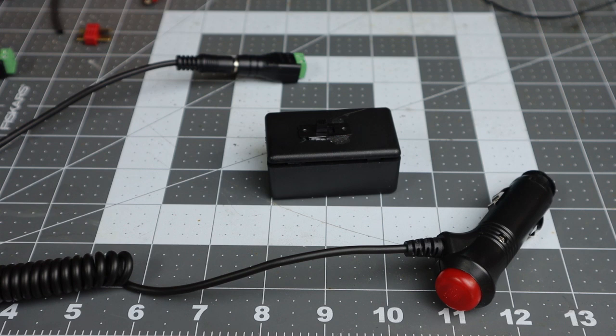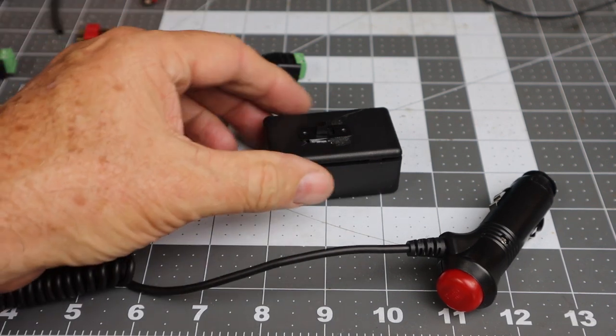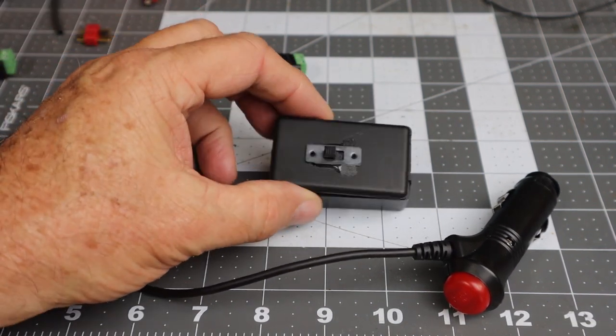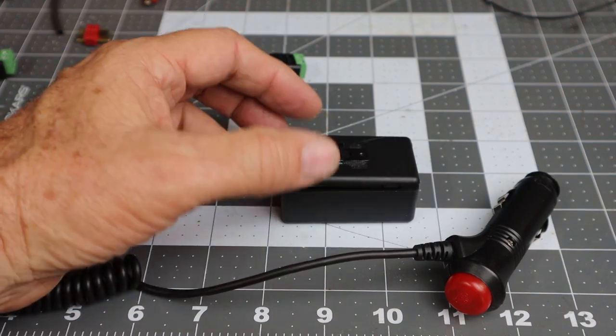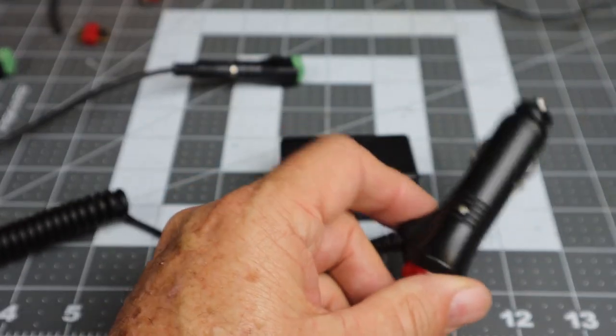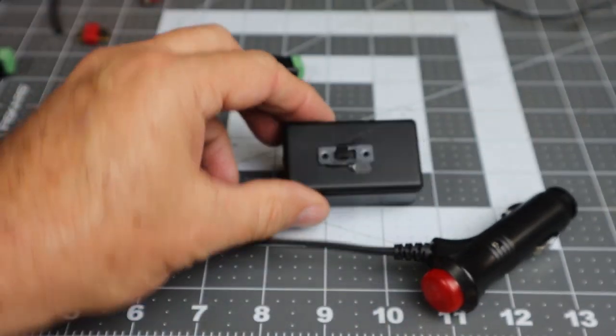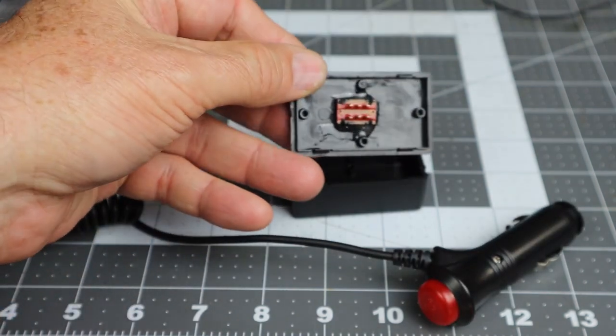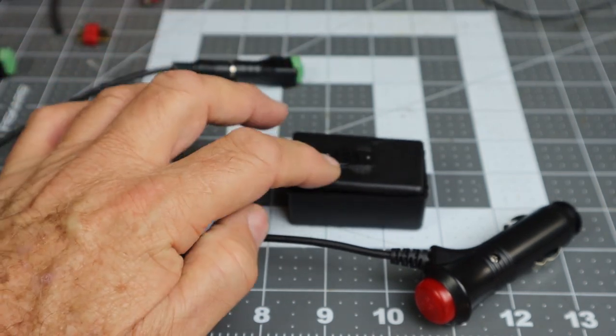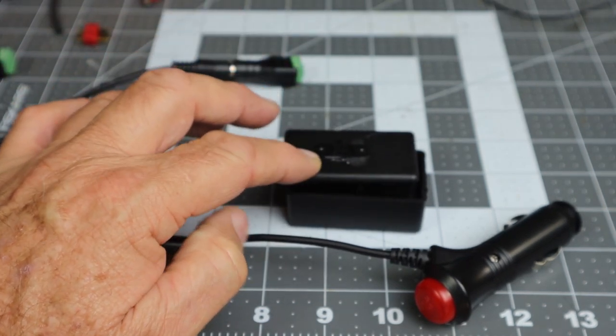If you're not familiar with using a multimeter in the ohms position and how to check the positions of a switch, keep watching. If you're familiar with how to test a switch, just go ahead and fast forward. I'm going to show you how we're going to test which pin positions on this switch we can use to successfully turn on and turn off the 12-volt line.